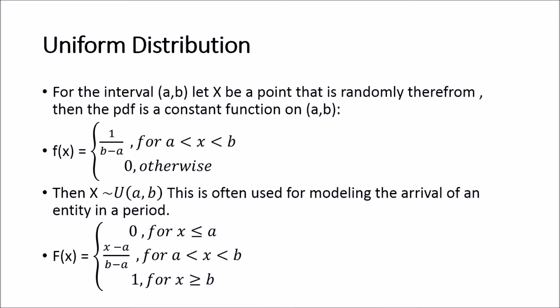So what is the uniform distribution? For an interval [a,b], if we let X be a point that is randomly drawn from this interval, then the PDF is a constant function on [a,b].